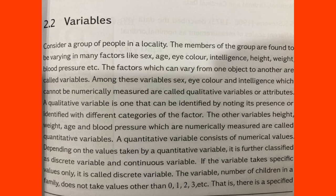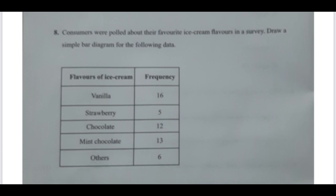For quantitative variable examples: height, weight, salary, profit, production, income. For qualitative variable examples: color, beauty, honesty. In this example, consumers were told about a favorite ice cream flavor. In this survey, draw a simple bar diagram for the following data — vanilla, strawberry, chocolate, mint chocolate, and others — with their frequencies.